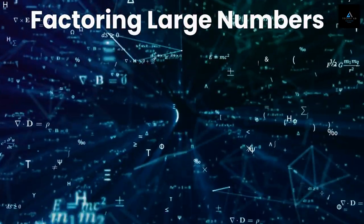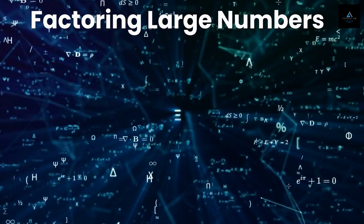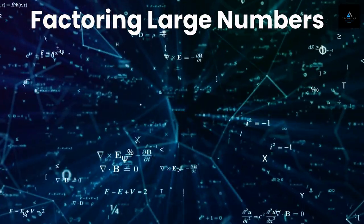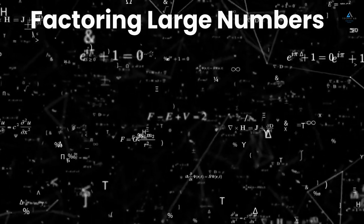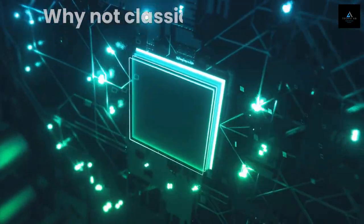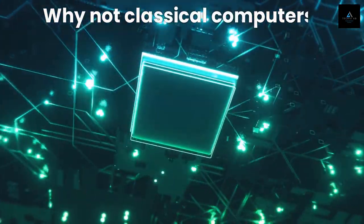To understand this better, let's consider a problem that is difficult for classical computers to solve: factoring large numbers. This problem is at the heart of many cryptographic algorithms used to secure our digital communications. Classical computers solve this problem by trying every possible factor until they find the correct one, which can take a very long time for large numbers.